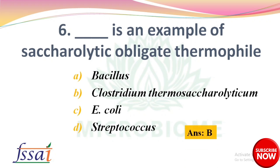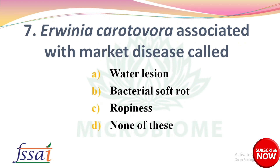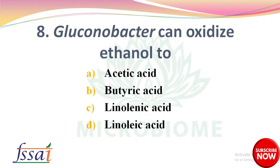Next: Dash is an example of sacrolytic obligate thermophile — options: Bacillus, Clostridium thermosaccharolyticum, Clostridium aceticum, Streptococcus. The right answer is option B, Clostridium thermosaccharolyticum. Next: Erwinia carotovora is associated with a market disease called — options: water lesion, bacterial soft rot, ropiness, none of these. The right answer is option B, bacterial soft rot. Next: Gluconobacter can oxidize ethanol to — options: acetic acid, butyric acid, linolenic acid, linoleic acid. The right answer is option A, acetic acid.